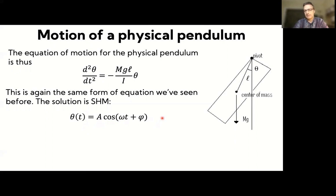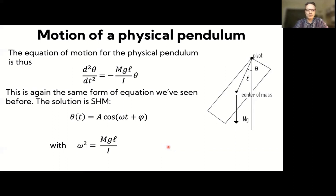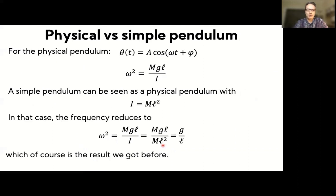The angular frequency omega for a physical pendulum is determined by the constant in the equation: ω² = mgL/I. Compare this to the simple pendulum, where we found ω² = g/L. The physical pendulum expression looks more complex at first sight.